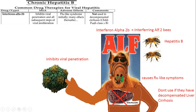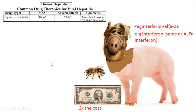Next we also have peg-interferon alpha. Here's the pig interfering ALF, with a B to remember hepatitis B. Same method of action and same adverse effects as interferon alpha-2b. The only difference is that it's two times the cost, so I drew a two-dollar bill to remember that.